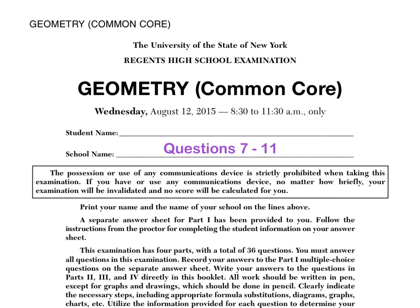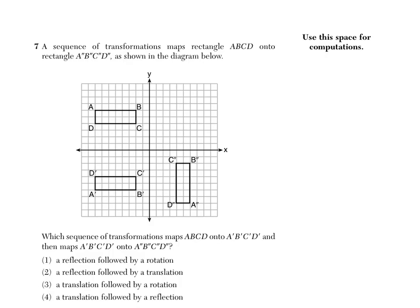This video will cover the Geometry Common Core exam from August 2015, questions 7 through 11. Number 7 says a sequence of transformations maps rectangle ABCD onto the double primes as shown in the diagram below. Which sequence of transformations maps rectangle ABCD onto the primes and then maps the primes onto the double primes?